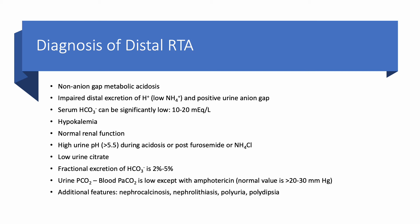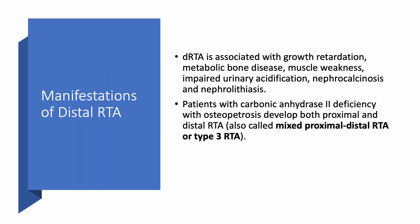Additional important features include nephrocalcinosis and nephrolithiasis. In children, you can also see polyuria, polydipsia, and growth retardation. In both children and adults, metabolic bone disease and muscle weakness can occur. Some patients have both proximal and distal RTA; since proximal is type 2 and distal is type 1, this combined form is called type 3, due to carbonic anhydrase 2 deficiency. These patients have osteopetrosis, and this is a very rare disorder.